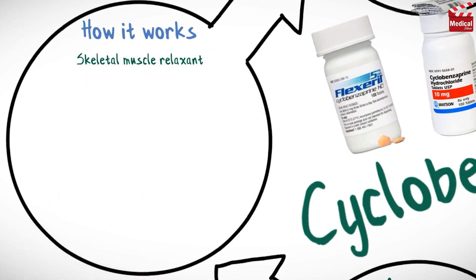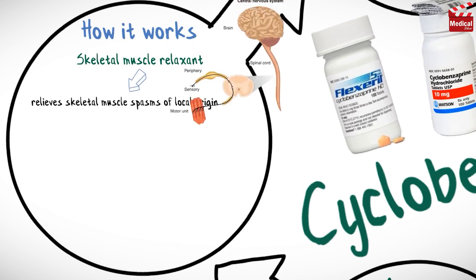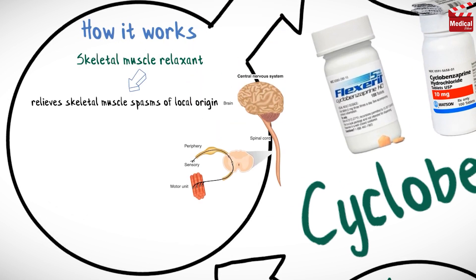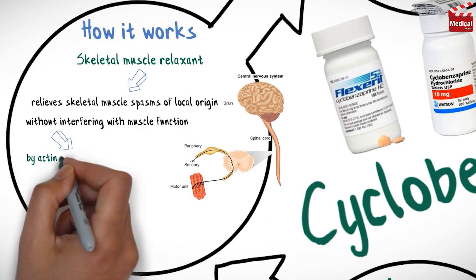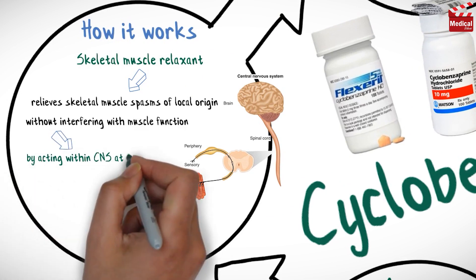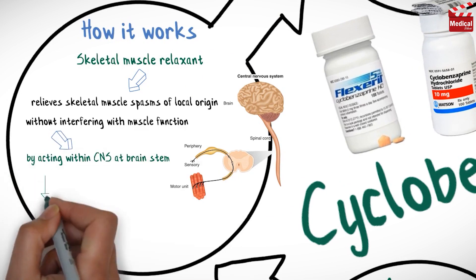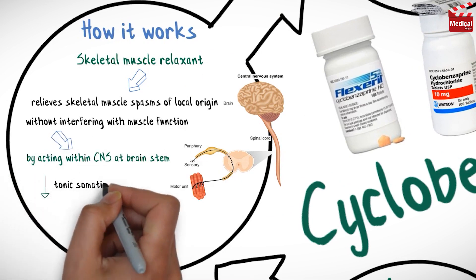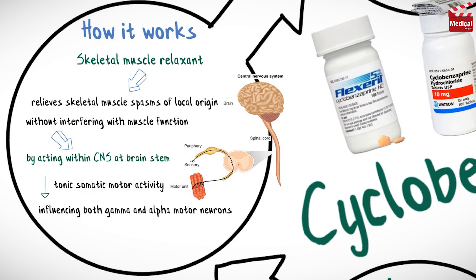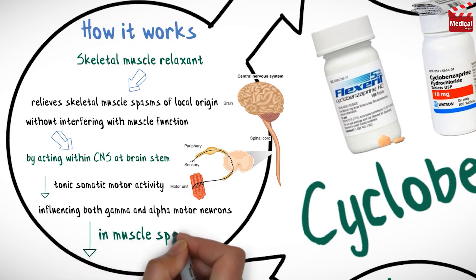Cyclobenzaprine is a skeletal muscle relaxant. It relieves skeletal muscle spasms of local origin without interfering with muscle function by acting within the CNS at the brainstem to reduce tonic motor activity, influencing both gamma and alpha motor neurons, leading to a reduction in muscle spasms.